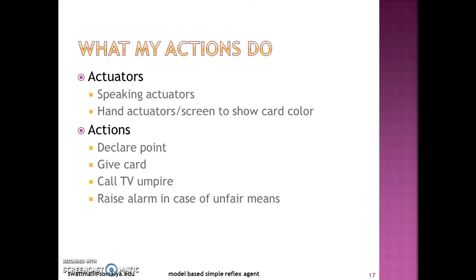Going ahead is what my actions do. For that, one has to define what actuators the agent has. The agent will require speaking actuators to converse with the TV umpire and to announce points or call out a player's name, and hand actuators or a screen to show the card color. The actions should be: declare a point, give a card, call TV umpire, and press alarm in case of unfairness.